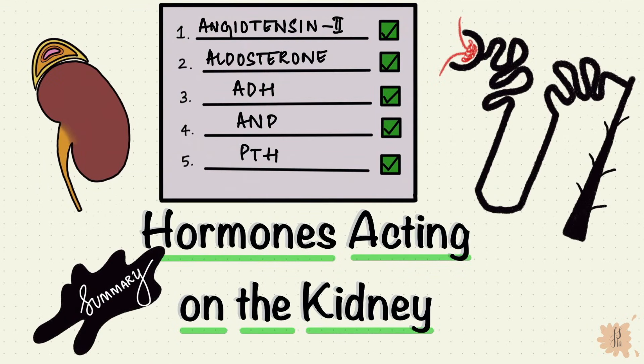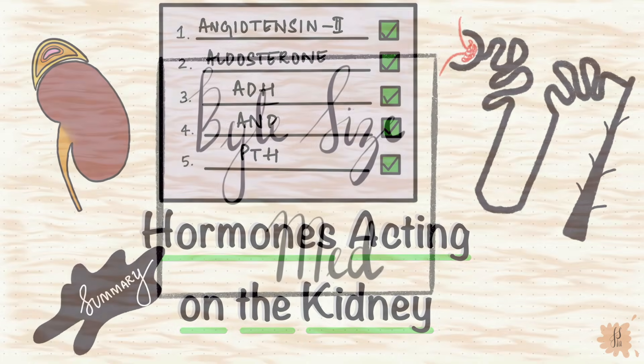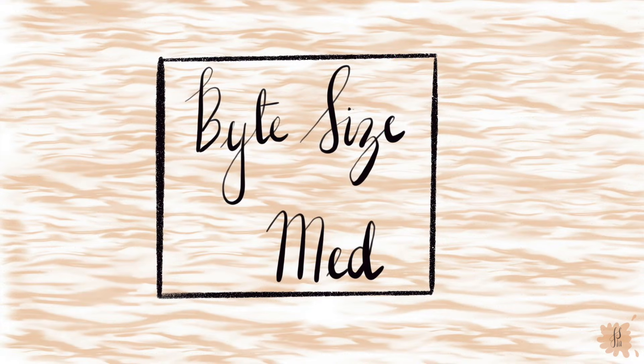And that is a summary of five important hormones that have their effects on the kidney. I hope you found this video useful. If you did, give it a thumbs up and subscribe to my channel. Thanks for watching, and I'll see you in the next one.